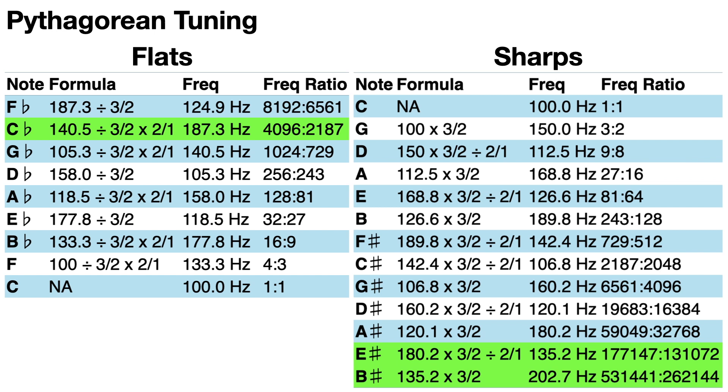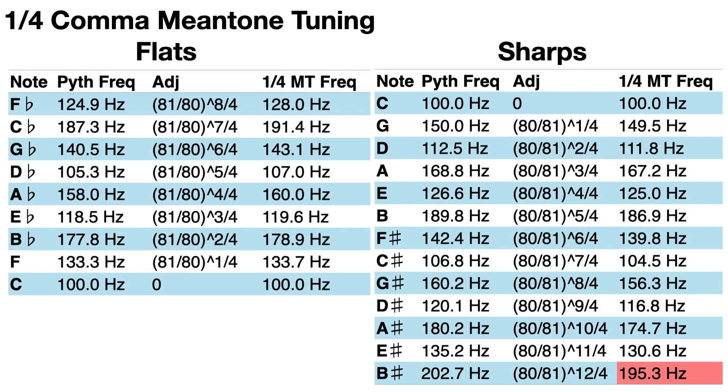In the previous video, we also looked at quarter comma mean tone tuning. The same notes and their related frequencies using this tuning is displayed here. Note this time though, that sharp notes have a lower frequency than their enharmonic flat notes.